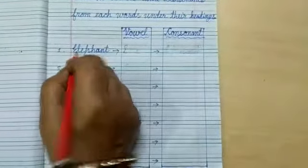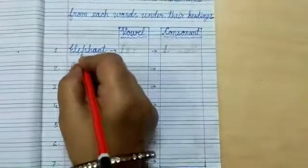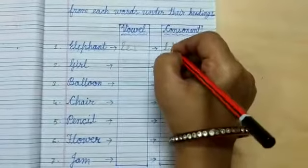Next, L. L is a consonant. Next, E is a vowel. Next, P. P is a consonant.